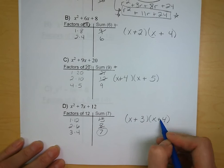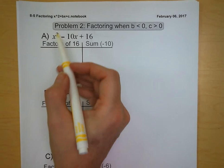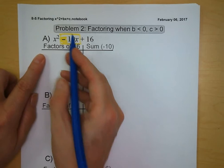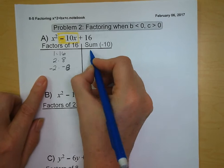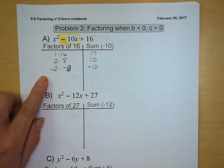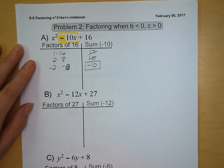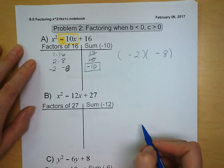Love it when everything's positive! Now it's time to get a little negative. Problem 2: we're going to be factoring when our b value is negative and our c value is positive. Our factors of 16 could be 1 and 16, 2 and 8, or negative 2 and negative 8. Their sums are 17, 10, and negative 10. A big hint: if our c term is positive and our b term is negative, both factors need to be negative. So we put in the subtraction sign, with 2 and 8, and plug in our variable x.